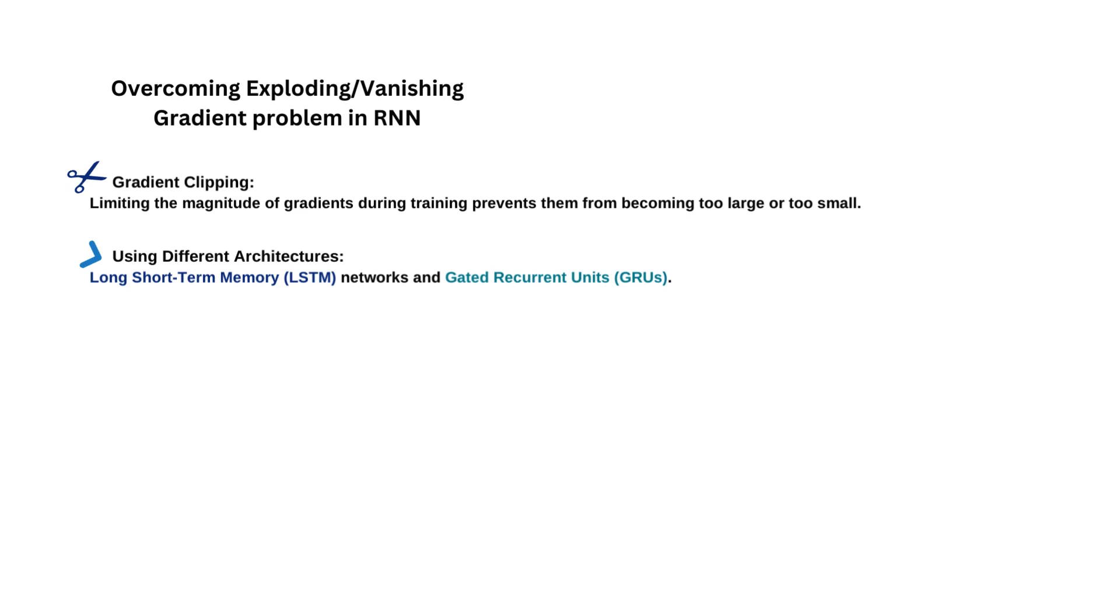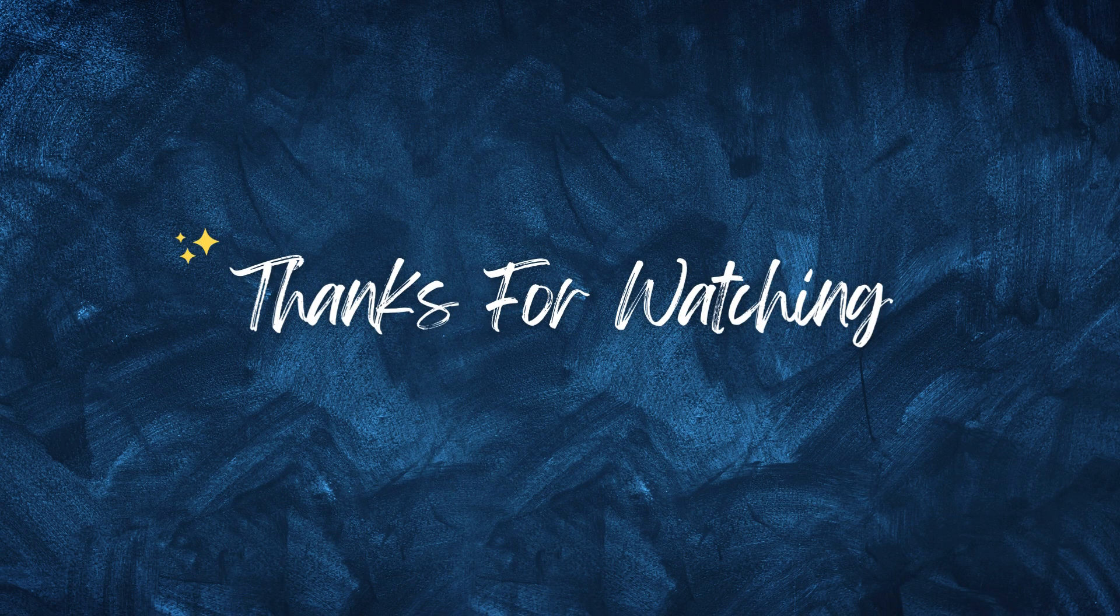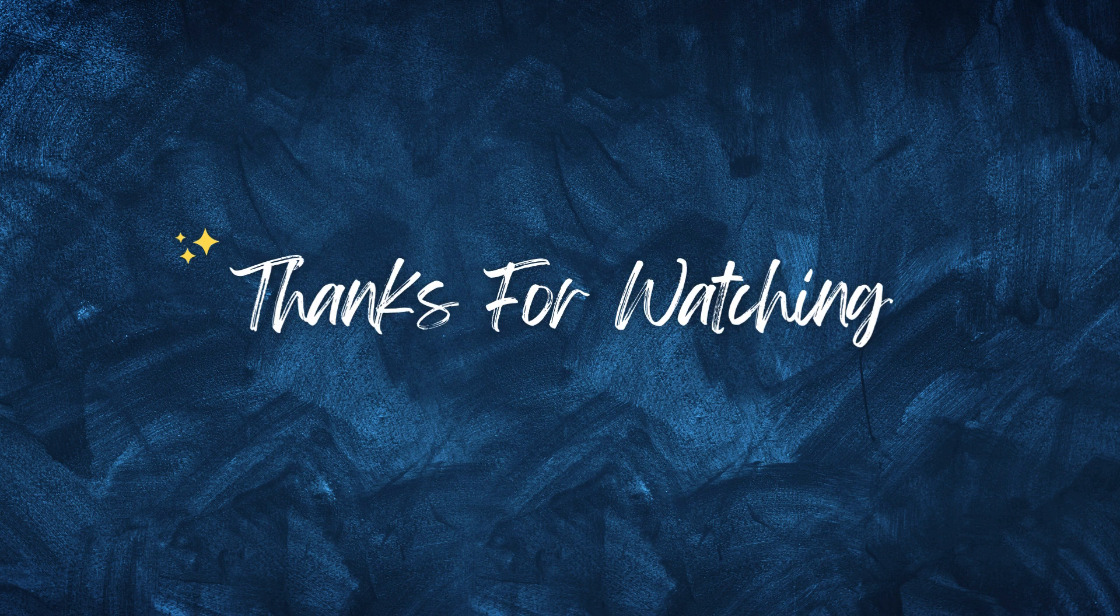The vanishing and exploding gradient problems in RNNs can be mitigated using various techniques. Limiting the magnitude of gradients during training prevents them from becoming too large or too small. This helps stabilize the training process and prevents exploding gradients. This is called gradient clipping. Architectures such as long short-term memory and gated recurrent units and mechanisms such as gates and memory cells that allow them to better capture long-term dependencies in data. Normalizing the activations of each layer can help stabilize training and prevent the vanishing gradient problem. Batch normalization normalizes the inputs to each layer, making optimization more stable. In this video, we saw the need, architecture, training process, and shortcomings of recurrent neural network. See you in the next video. Thank you.